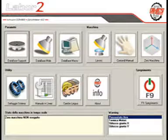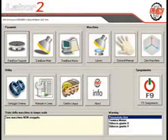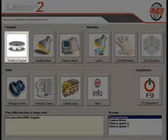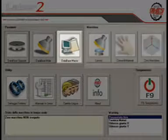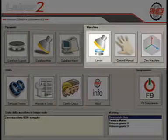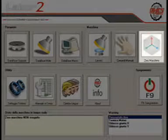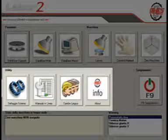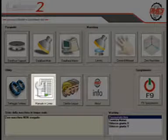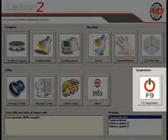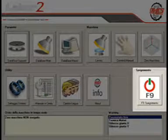The management software has an initial page that provides access to the various program sections through icons. The first section is the database, in turn divided into three parts: lens holder management, tool management and macro management. The second section governs machine action and is also divided into three parts: work, manual commands and machine zero routine. The third section deals with utility, divided into four parts: machine setting adjustment, manual online, language change and the fourth provides information on the COMES company. The fifth and last section is used to switch off the machine on operation completion.